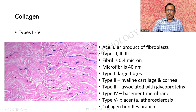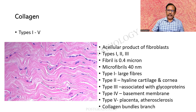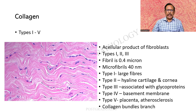Type 1 is large. Type 2 occurs in hyaline cartilage and the cornea. Type 3 is associated with glycoproteins. Type 4 incidentally forms the basement membrane — we may never have thought that the basement membrane is also a form of collagen, and it is of great importance particularly in the kidney. Type 5 occurs in the placenta and lesions such as atherosclerosis. The collagen bundles branch, but fibrils do not.